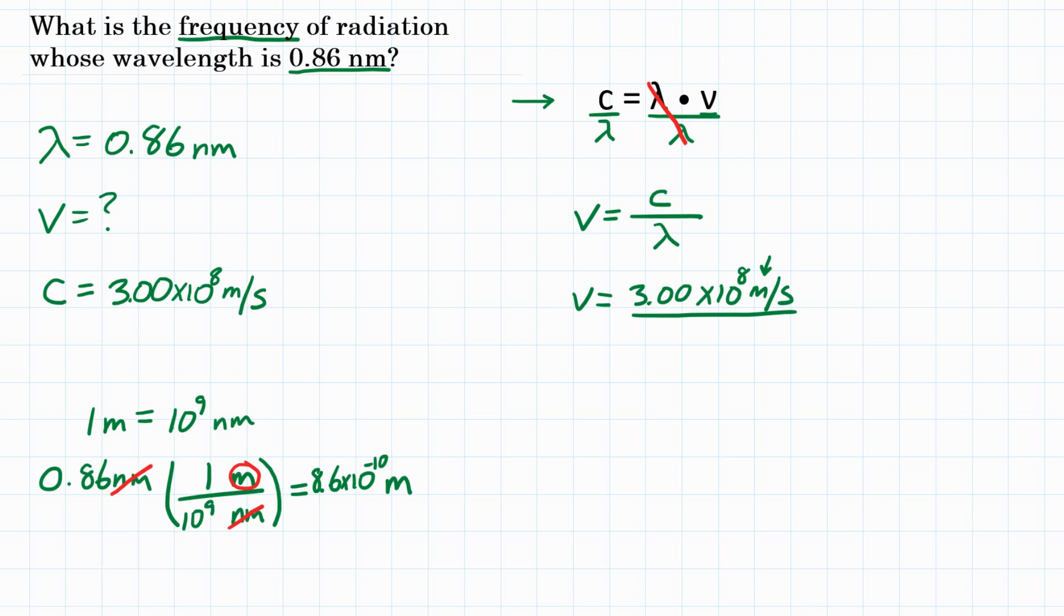So that is the wavelength that we will want to put into our equation. So over here, 8.6 times 10 to the negative 10th meters. So we have our values in our equation. Looking at our units, we have meters on top, meters on bottom. So they will cancel out. And we will be left with per second.